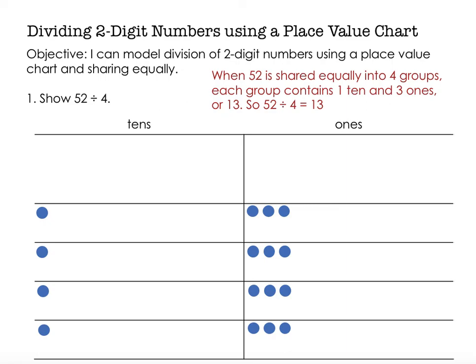Next time we'll look at what happens if I have one or more ones left that can't be shared equally — what can I do then? We'll look at that next time. But today our objective was: I can model division of two-digit numbers using a place value chart and sharing equally. Thanks for watching.